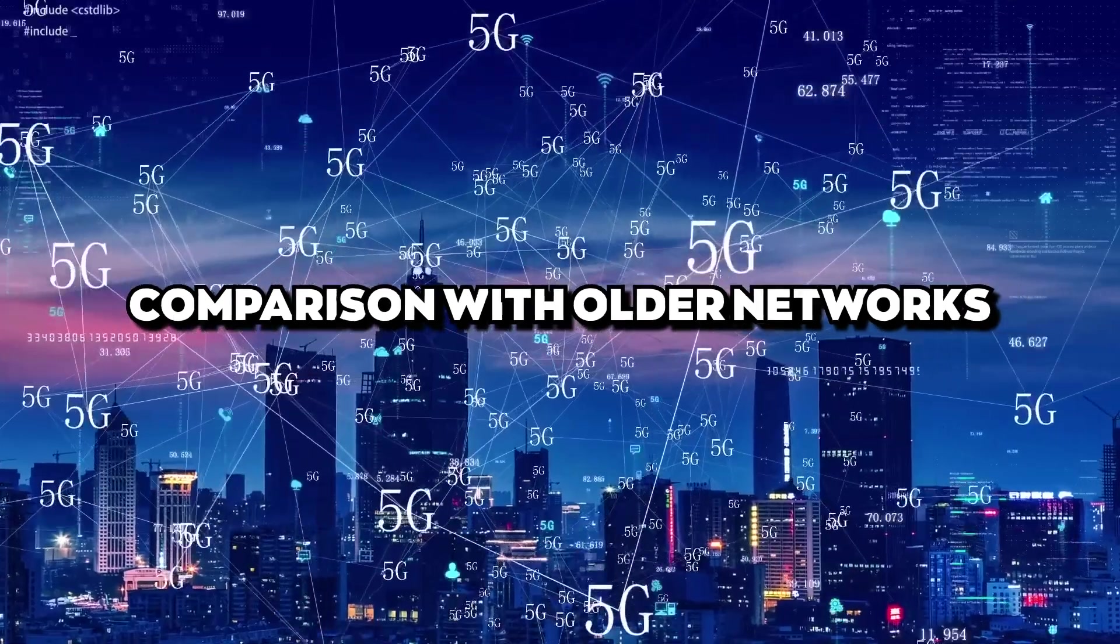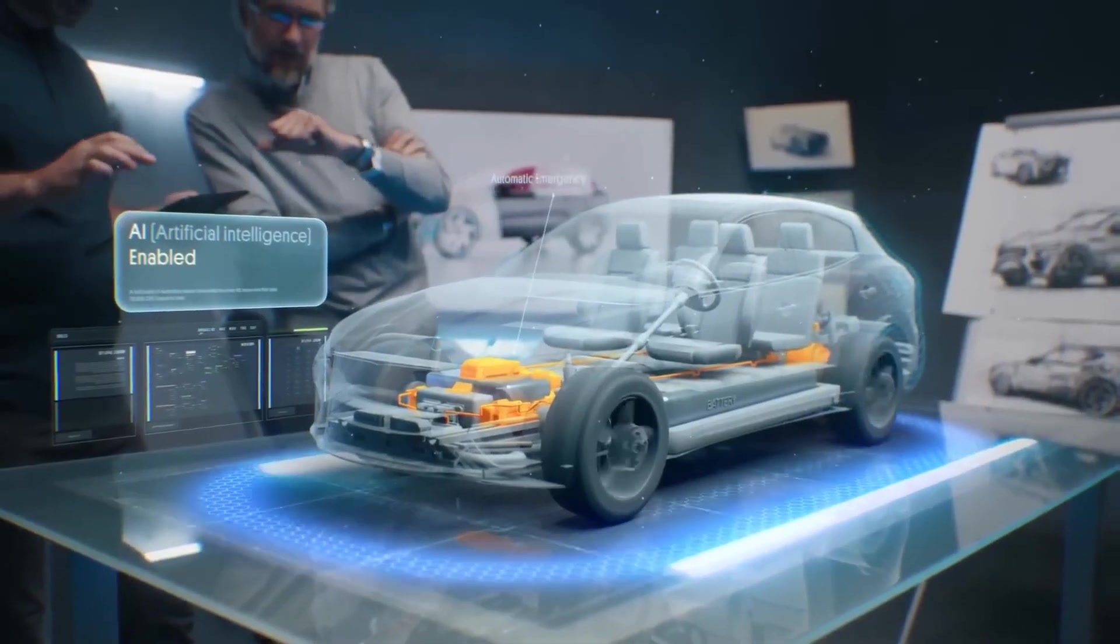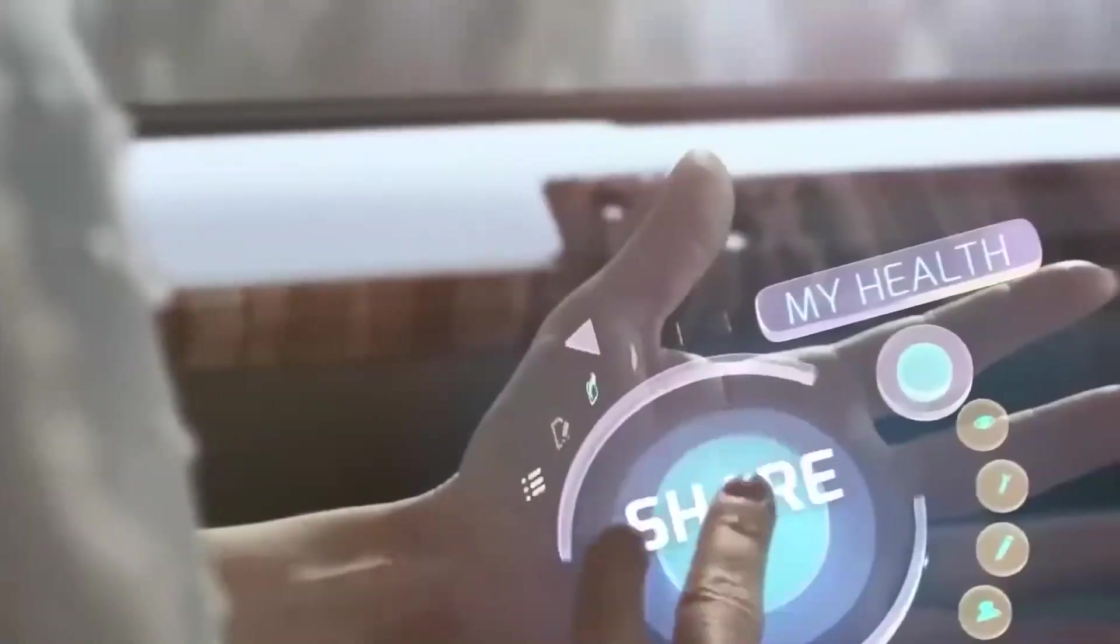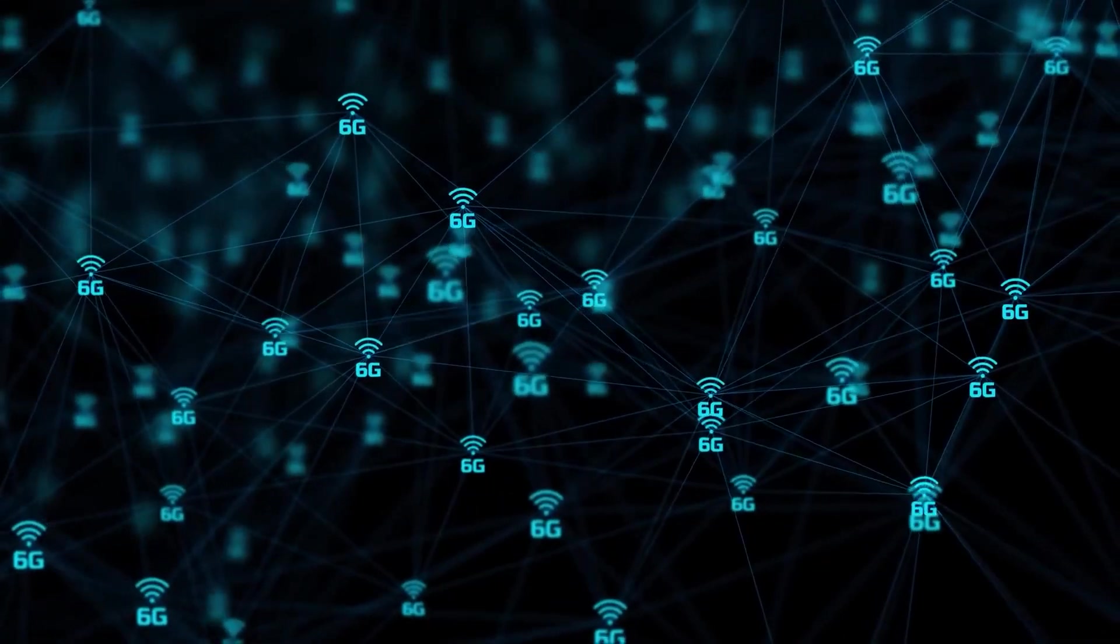Comparison with older networks. 3G: Voice calls and text messages. The journey began with 3G networks, which primarily facilitated voice calls and text messages. It was a significant leap from 2G, introducing mobile data and mobile internet.